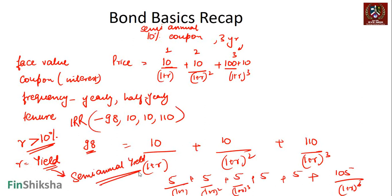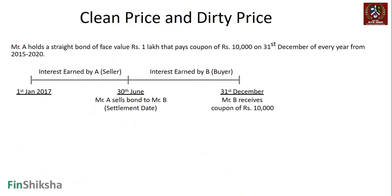So given the yield you can find the price, and given the price you can find the yield — that's the bond basics recap. We discussed this in the financial management course. What we extend here is an understanding of a few more terminologies related to bonds: the concepts of clean price and dirty price.